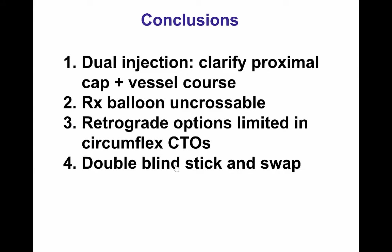The conclusions from this case are that dual injection is critical to clarify proximal cap ambiguity and determine vessel course and best re-canalization strategy. It is important to have an algorithm for treating balloon-uncrossable occlusions, going systematically through small balloons, increased guide catheter support, microcatheters, and laser until a solution is found. In circumflex CTOs, the retrograde approach can be limited when good interventional collaterals are absent, making antegrade dissection re-entry capacity essential. The double-blind stick-and-swap technique can help re-enter small diffusely diseased distal vessels successfully.